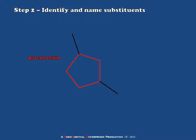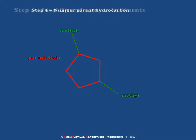In step 2, we identify and name the remaining substituents. Let's color these in green and label them as methyl, because each has a single carbon. So we're dealing with some kind of dimethylcyclopentane. But this name is still ambiguous because the positions of the methyls have yet to be indicated. So we move on to step 3 — numbering the parent hydrocarbon. We start with a 1 at the substituent which is alphabetically first. In this case, either one of the methyl groups can be used because they each have the same name, and therefore it is an alphabetical tie.